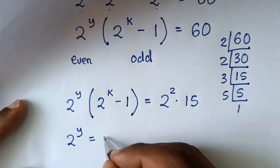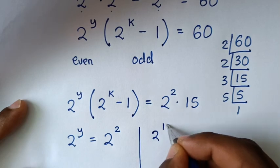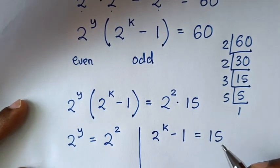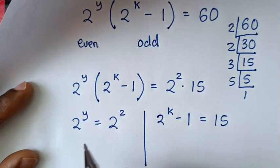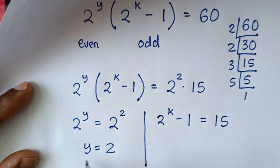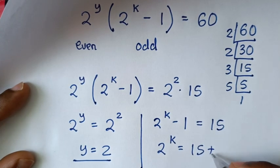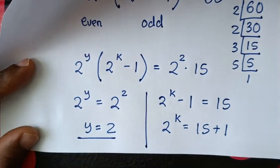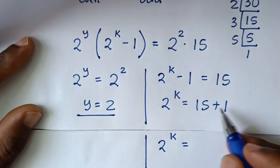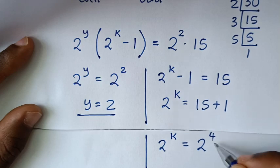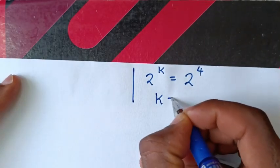We compare the even part: 2 to the power of y equals 2 to the power of 2, so y equals 2. And comparing the odd part: 2 to the power of k minus 1 equals 15. Taking negative 1 to the other side gives 2 to the power of k equals 15 plus 1, which is 16. Since 16 is the same as 2 to the power of 4, comparing powers gives k equals 4.